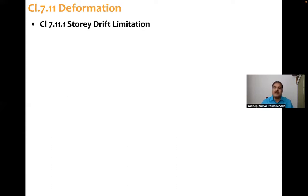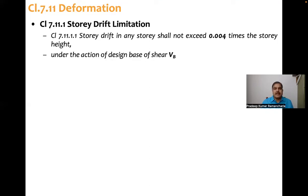Now clause number 7.11.1, that is on story drift limitation. So what code says is: story drift in any story shall not exceed 0.004 times the story height. That means 0.4% of story height under the action of design base shear.